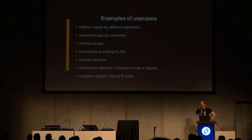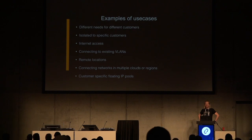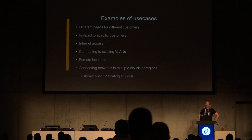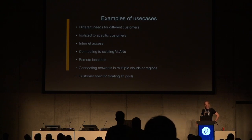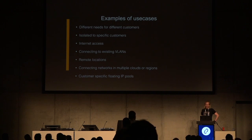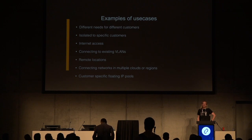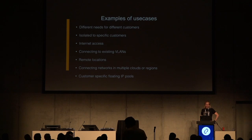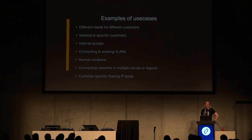So what use cases do we have? Of course, there are many different needs for different customers. Some of those connections need to be isolated to specific customers, especially in the public cloud. If a customer needs some special way to connect to other resources, it's nothing that any other customers should be able to use. Internet access is another way to connect to external resources. Connecting to existing VLANs can be used either to transport data to another location or just to physical servers in the same data center. Remote locations — a customer might want to connect their OpenStack virtual resources to their own office or data center, and have ways to communicate even to tenant networks, not just the provider networks.